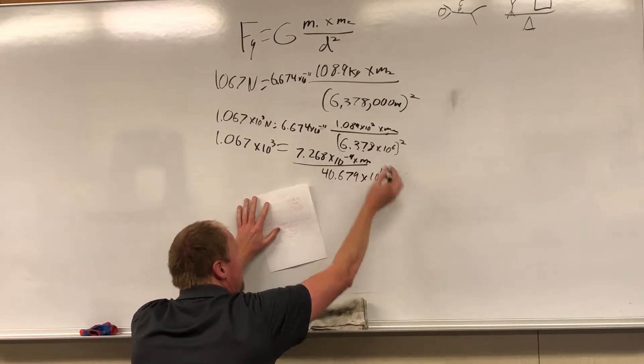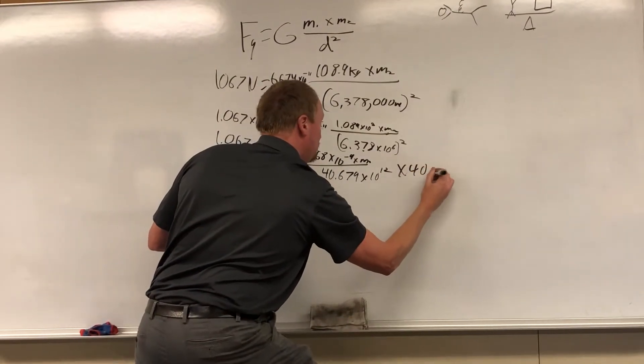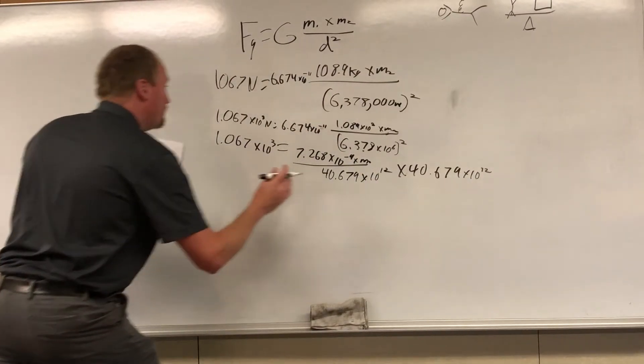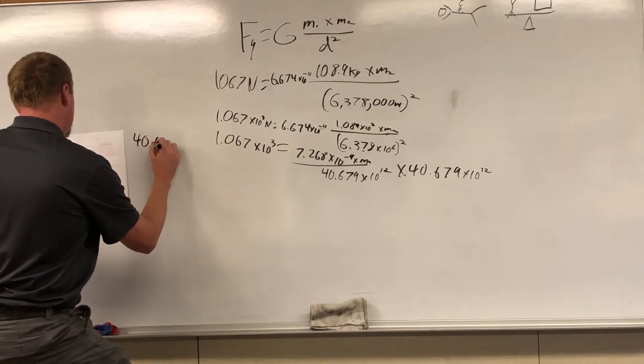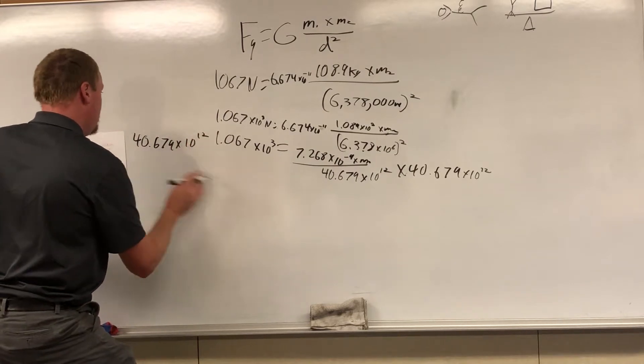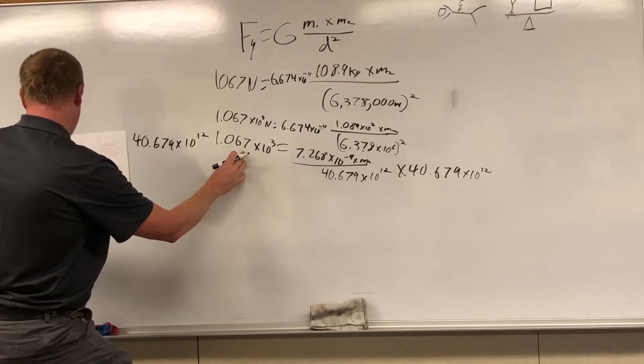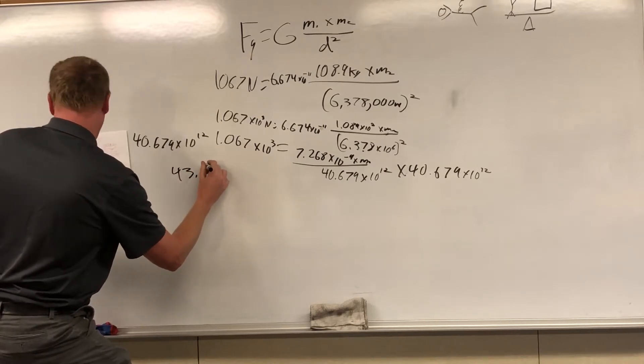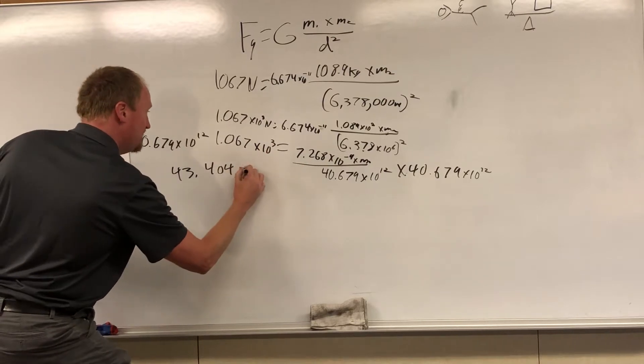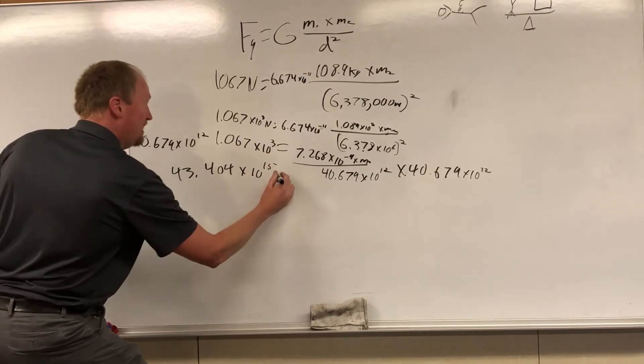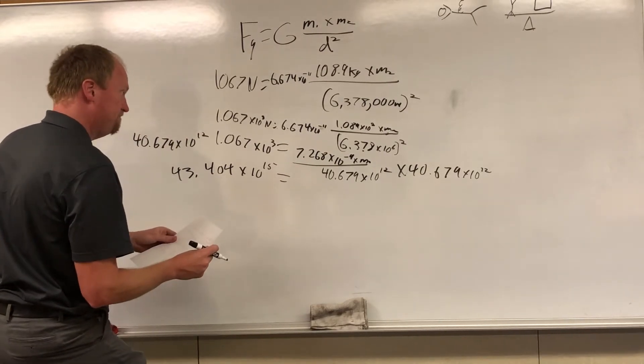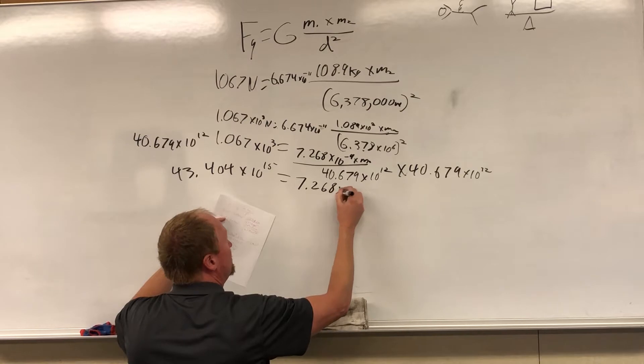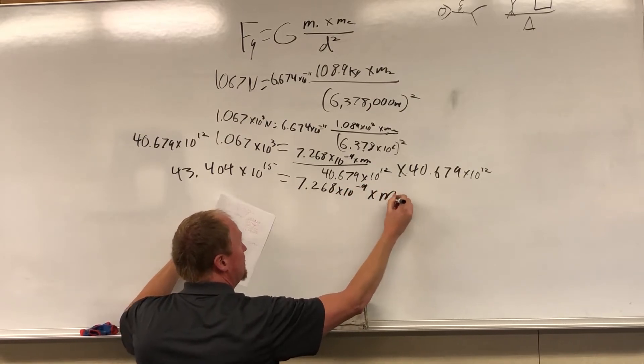Now I want to try to isolate the mass of Earth, so I'm going to multiply this by 40.679 times 10 to the 12. Think about how many zeros I'd have to have if I was not doing scientific notation. And over here, 40.679 times 10 to the 12, 40 times 1.069 gives me 43.404, 12 plus 3 is times 10 to the 15th.